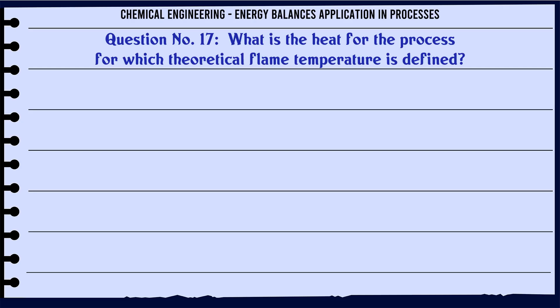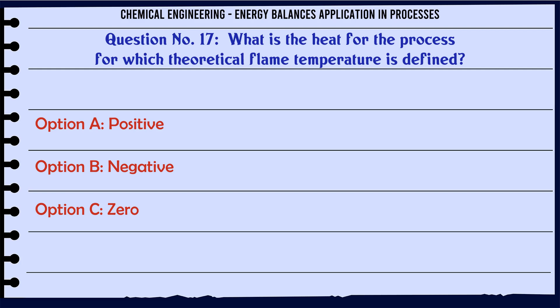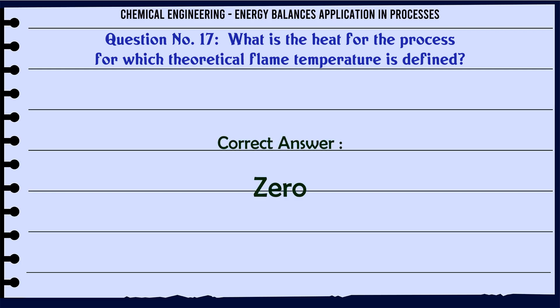What is the heat for the process for which theoretical flame temperature is defined? A: Positive. B: Negative. C: Zero. D: Cannot say. The correct answer is zero.